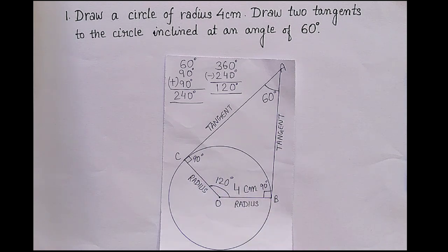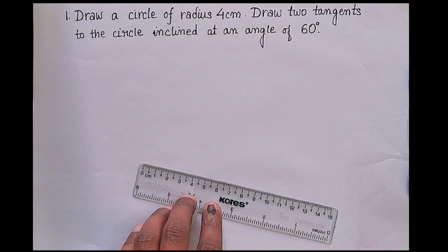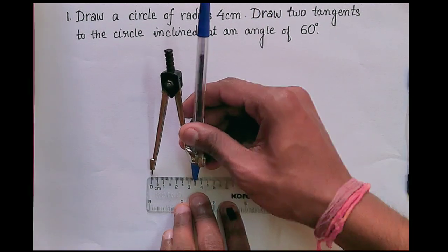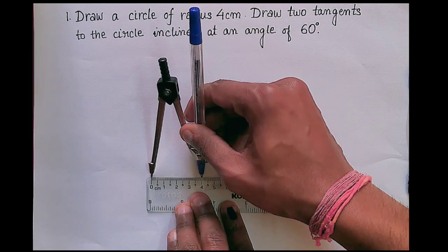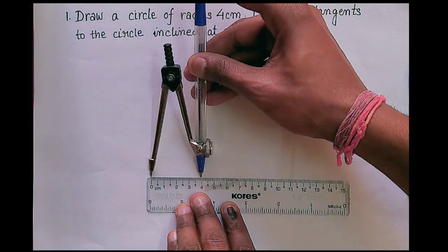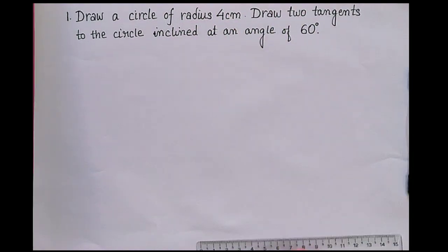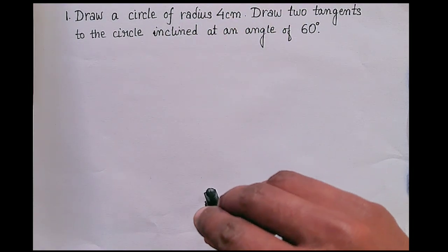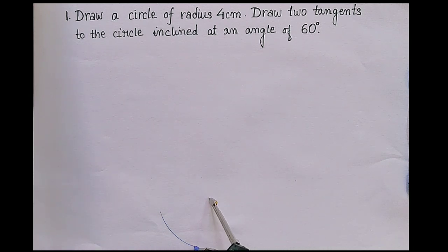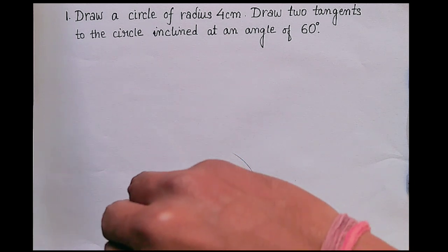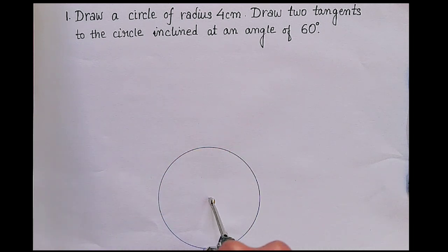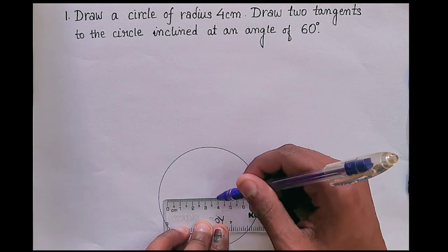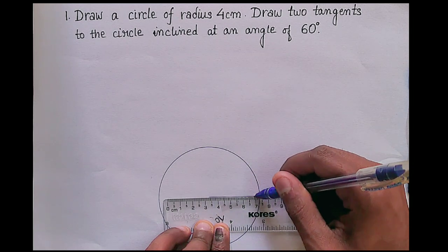Let's start. With the help of compass and scale, measure 4 centimeters, then draw a circle. This will be the radius of 4 centimeters.